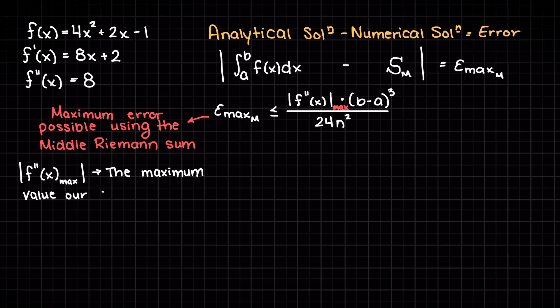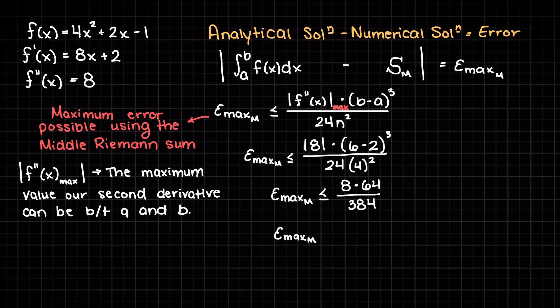Because our function is a polynomial, finding our second derivative is extremely easy and is actually just a constant. Plugging all these values in we get 1.33 repeating as our maximum error.